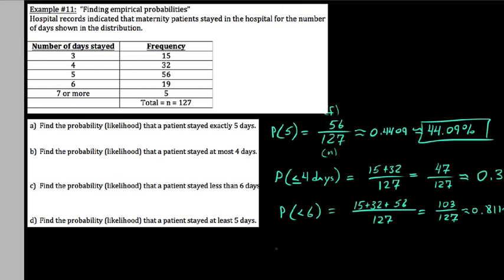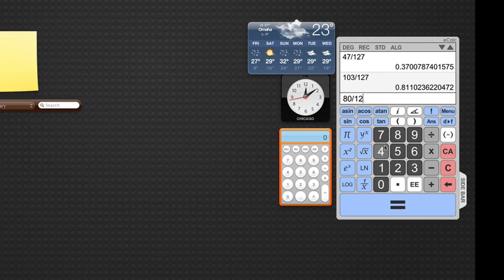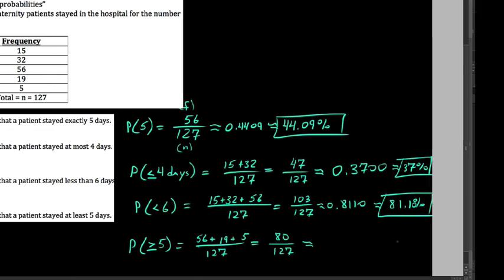The last one says, find the likelihood that a patient stayed at least five days. So at least means five or more. Since it is equal to five or more, we say greater than or equal to five, which would be the probability of five, six, or seven or more. So five would be 56 people. Nineteen people stayed six days. And five people stayed seven or more days. So 56 plus 19 would be 75, plus another five is 80 of 127. So five or more days, 80 divided by 127, about a 62.99% chance.